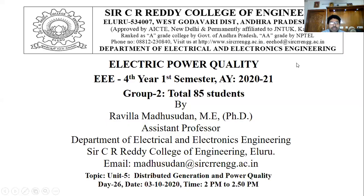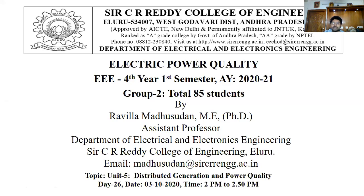Welcome to the lecture series on Electric Power Quality. We have successfully completed four chapters. The first unit covered basic power quality issues and different types of power quality. The second unit covered key terms. The third unit discussed sag, swell, interruptions, and related topics. The fourth unit covered equations to minimize voltage regulation. Now we come to Chapter 5: Distributed Generation and Power Quality.